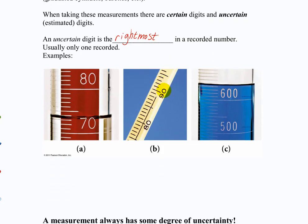To practice that a little bit since I know you've done this before, let's look at these three examples. I'm going to turn the lights down so you can see them well. On the left we have a graduated cylinder with a certain amount of liquid. If you were to write down the correct measurement for that in milliliters, what would it be? What's the correct way to report that with all certain digits and one uncertain digit?